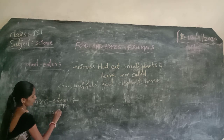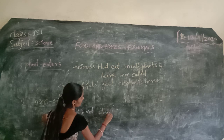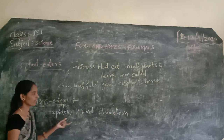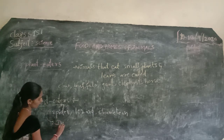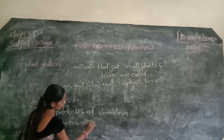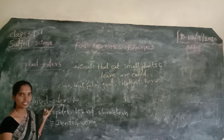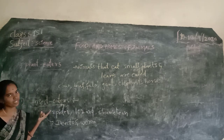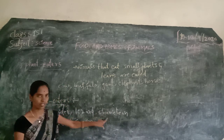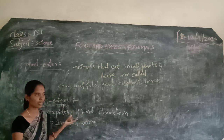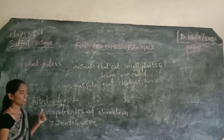Some animals like spider, lizard, and chameleon eat insects and worms only. Animals that eat insects and worms are called insect eaters. For example, insect eaters are spider, lizard and chameleon.